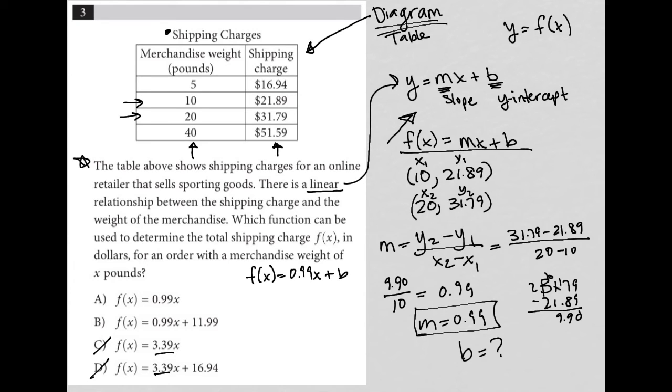I'm going to fill in an ordered pair again here. So I'm going to use the top one, 5 and 16.94. So I'm going to say when X is 5, F of X should be 16.94. And then I have some more math to do here. And the truth is,